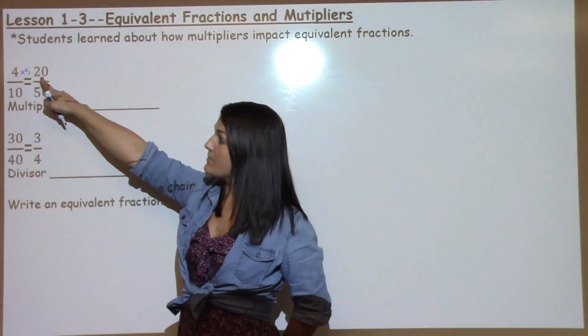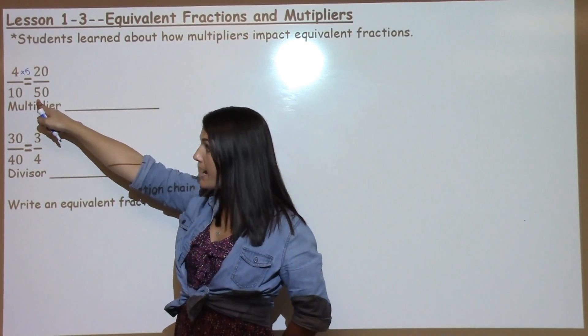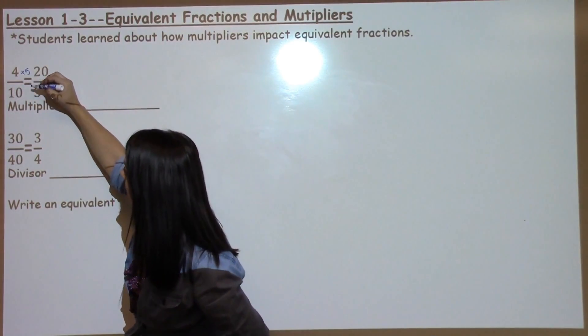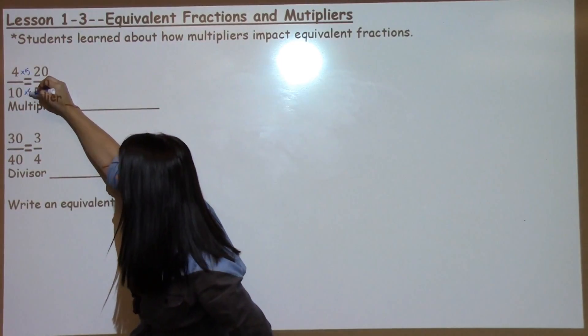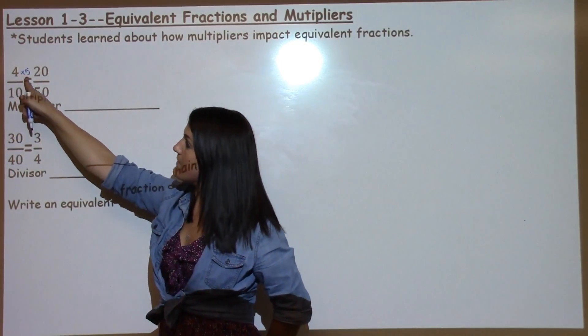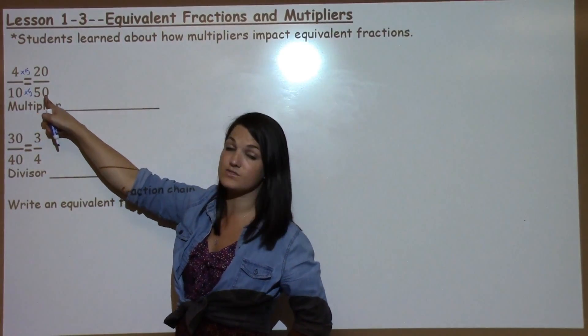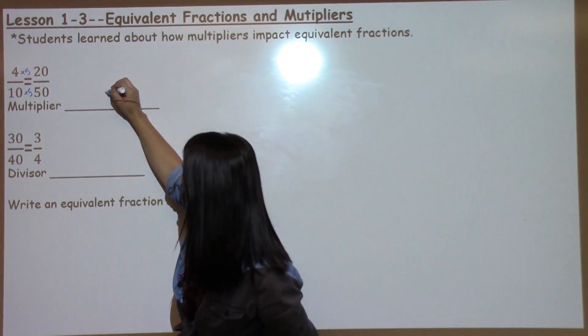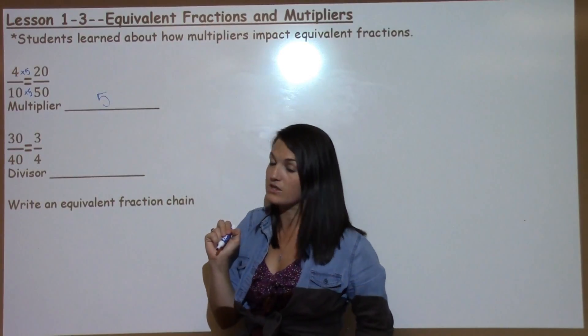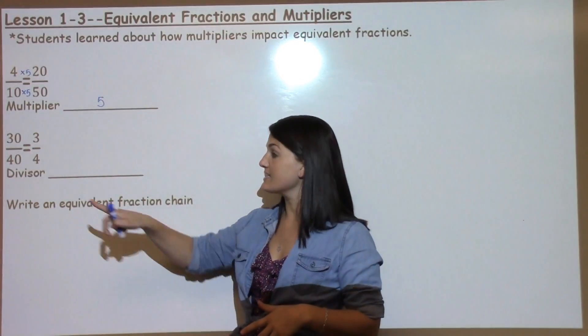Anything we do to the top, we also do to the bottom. So if you multiply by 5, then you multiply the bottom by 5 as well. 4 times 5 gives you 20, and 10 times 5 gives you 50. So the multiplier is 5 to make those fractions equivalent.